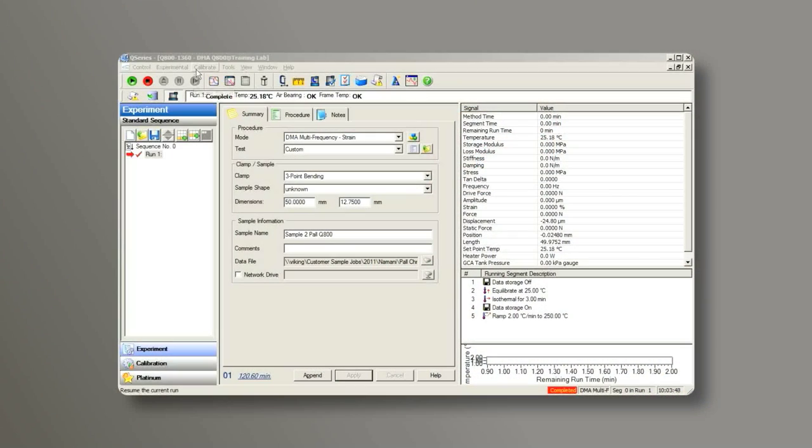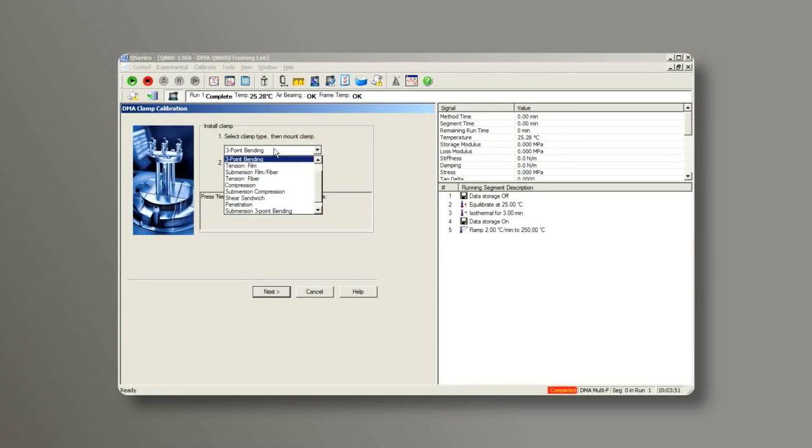From the control software, go to Calibrate, Clamp, choose Film Tension, All Calibrations, Next.